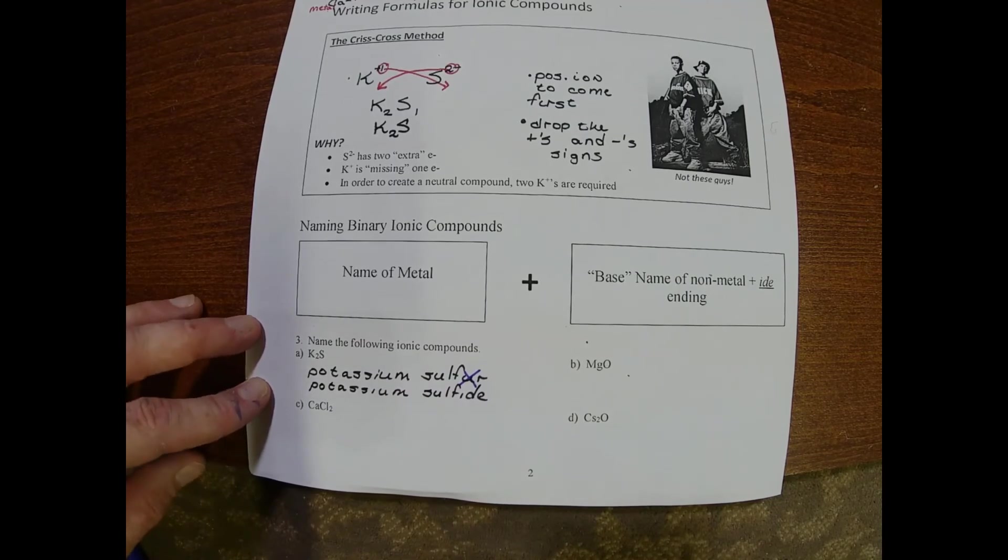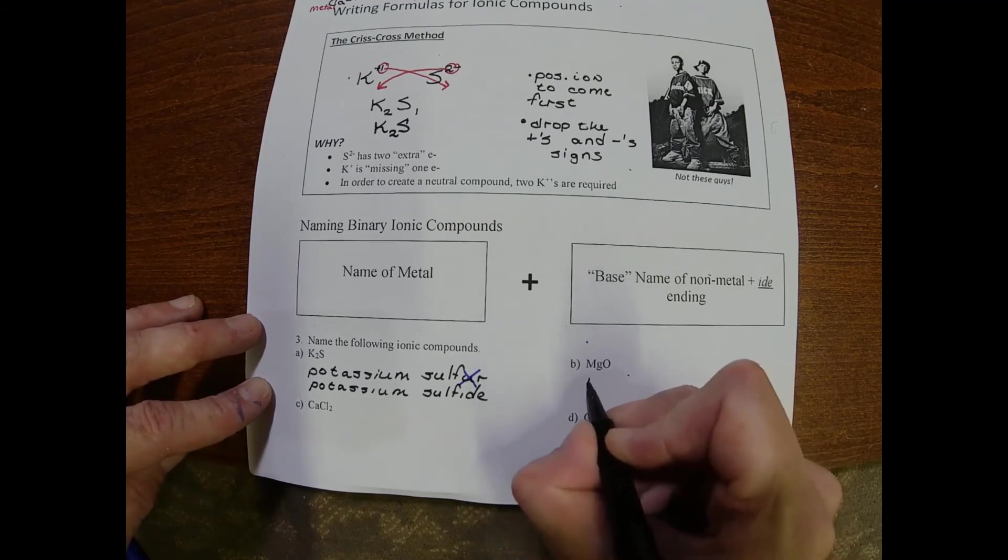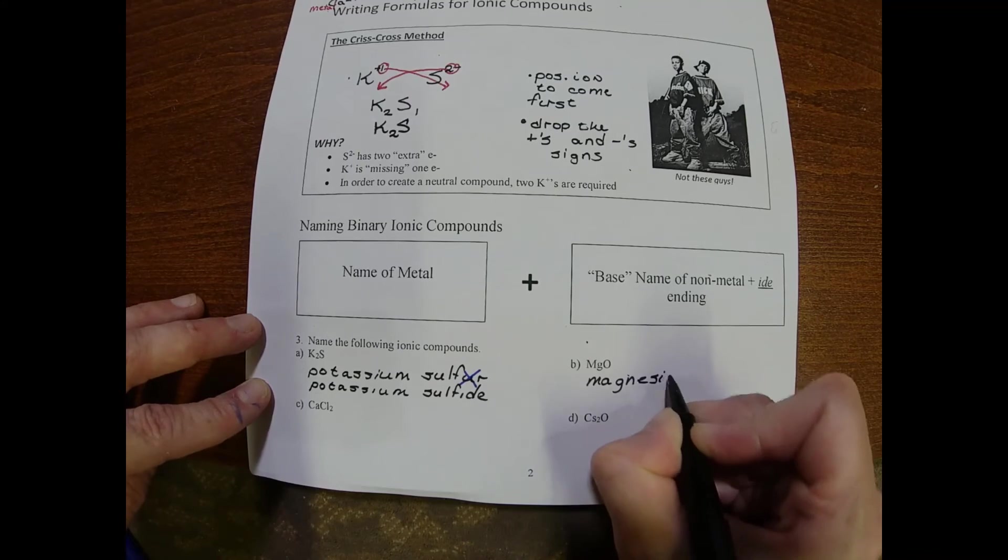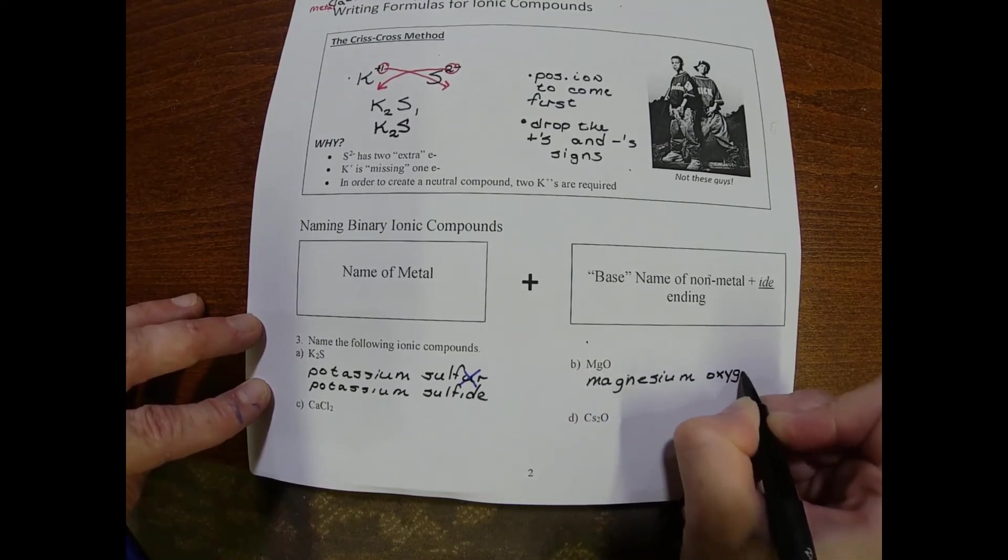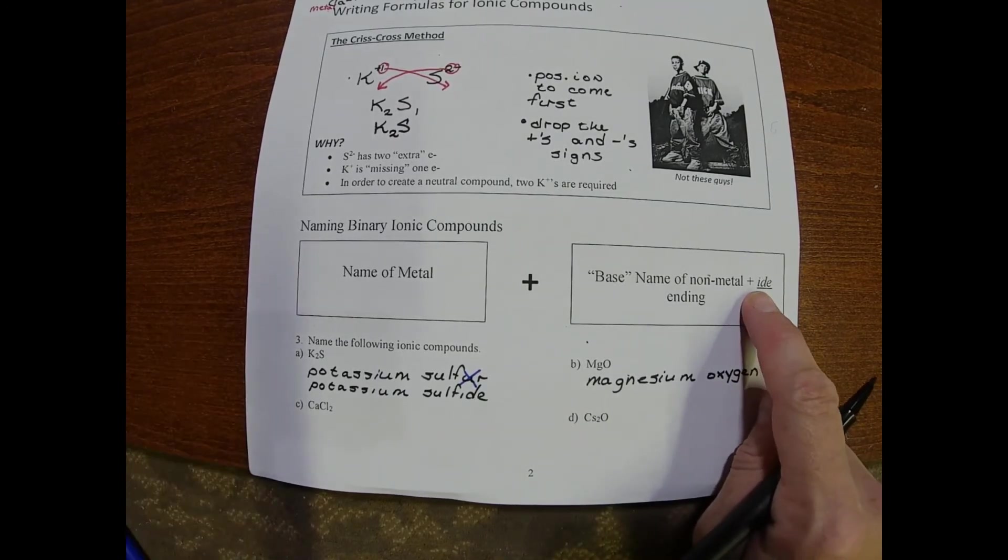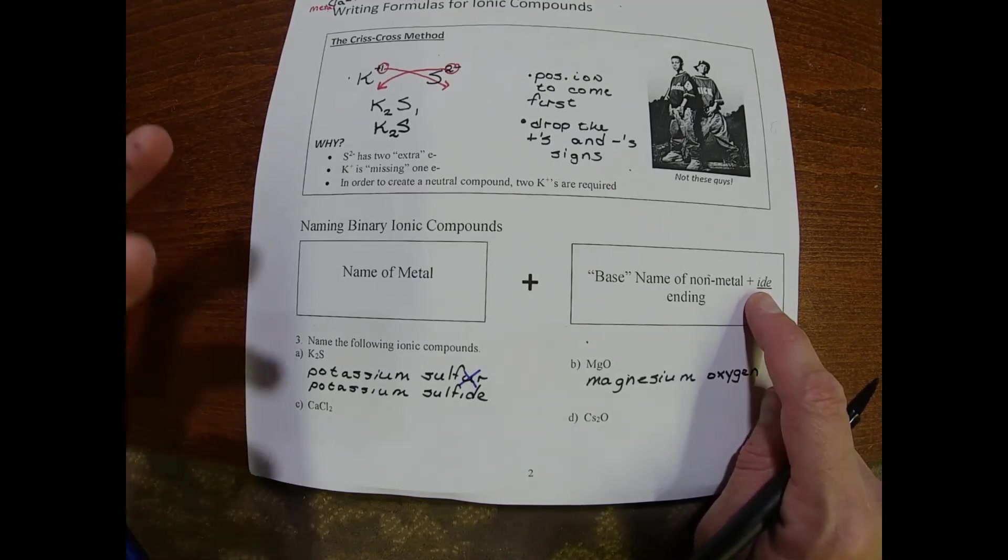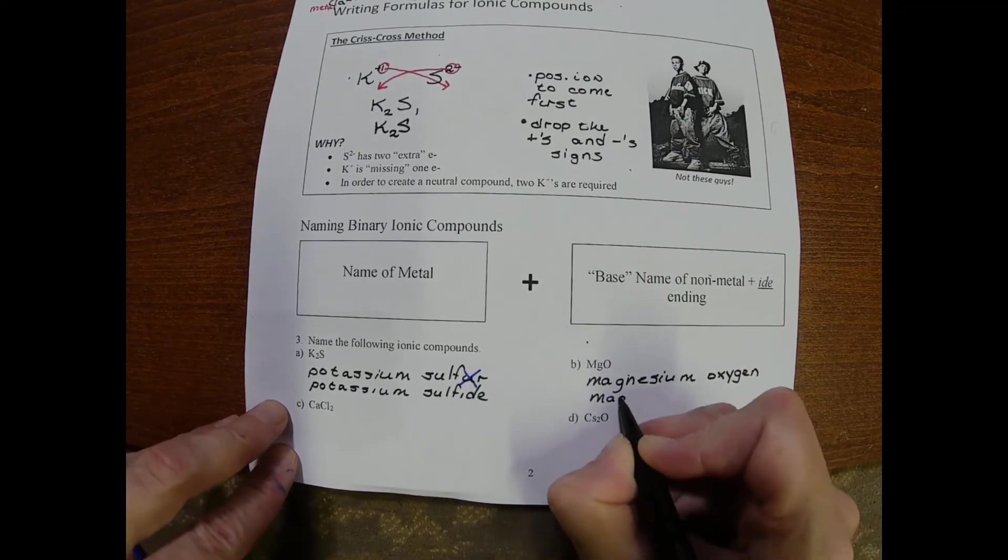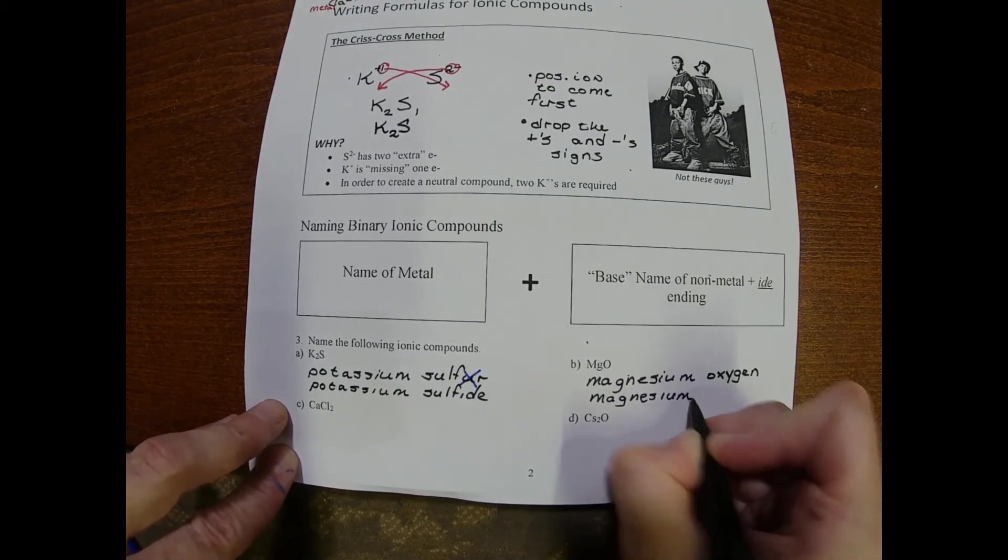Let's do another one. We have magnesium and oxygen. I'll write out the names of the elements first. You're always going to change the name of that nonmetal component to something with an -ide ending. The -ide ending means it's negatively charged, it picked up electrons, so we're going to call this magnesium oxide.